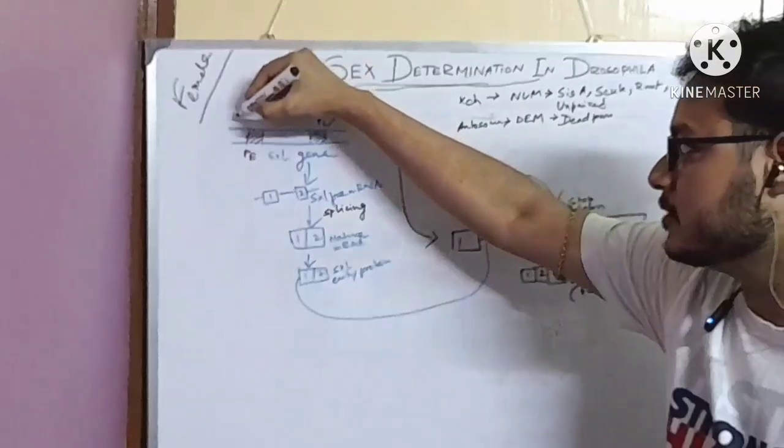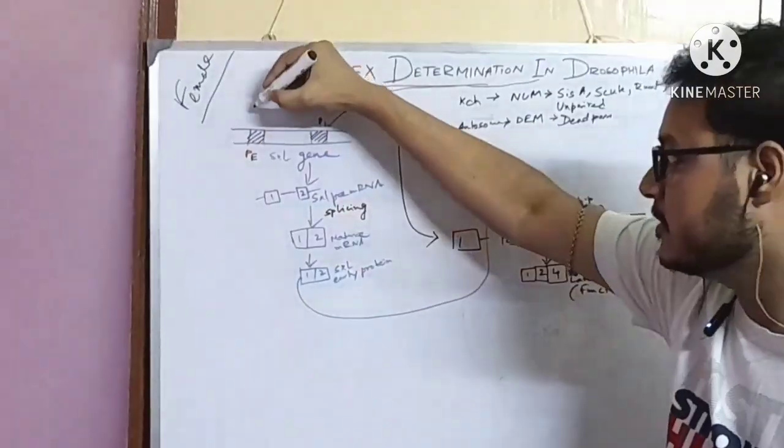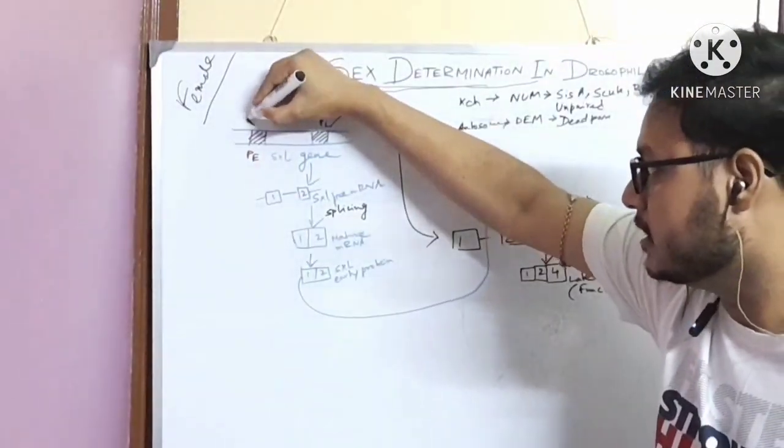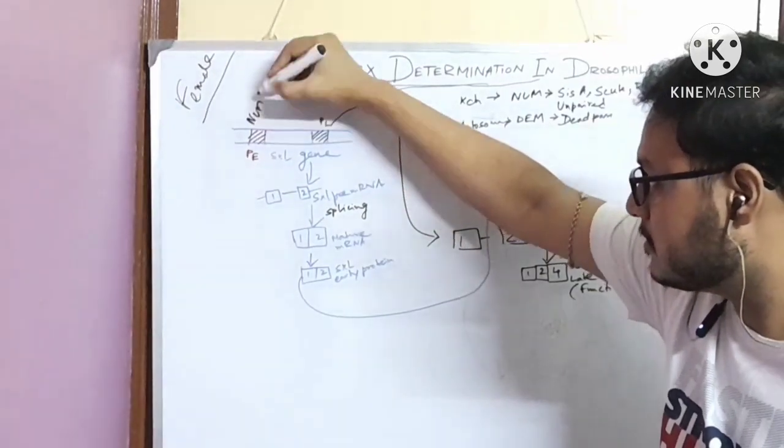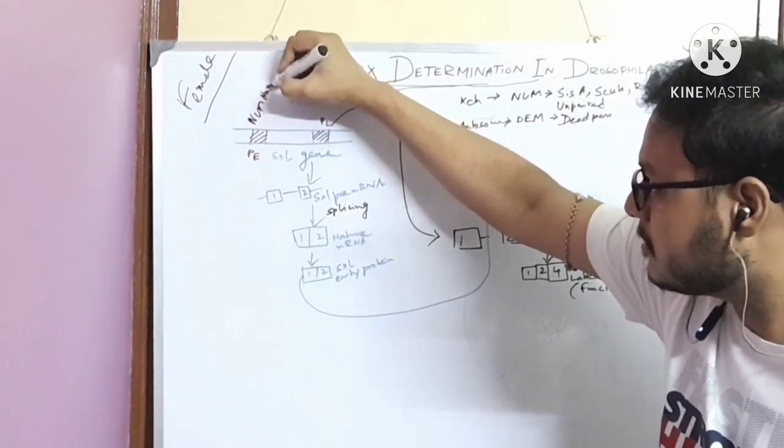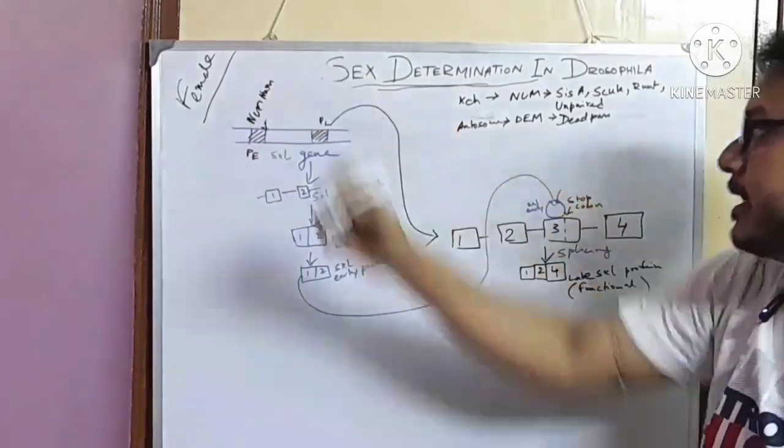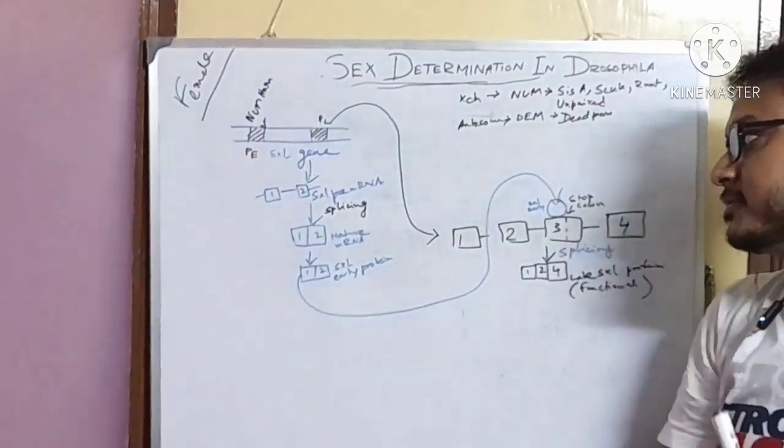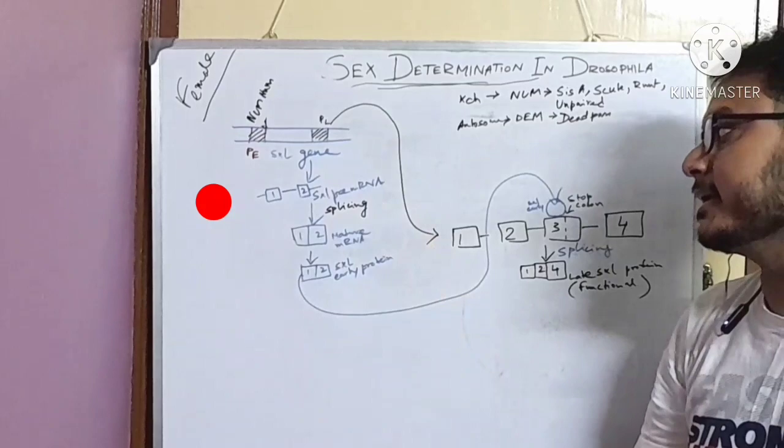This numerator complex, which is encoded by the X chromosome, binds to the promoter early and they produce SXL pre-mRNA.